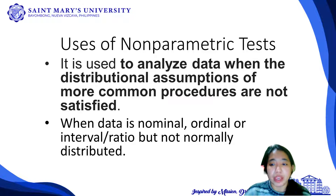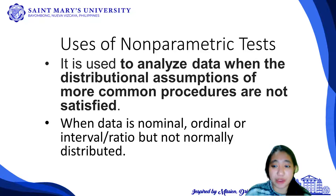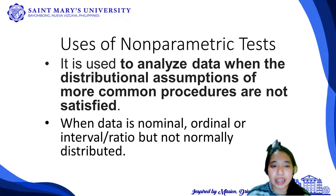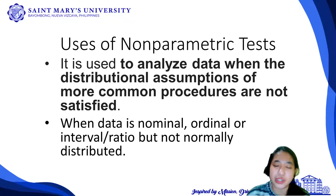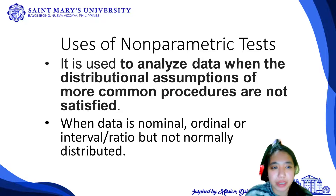Meaning to say, if we fail to satisfy the condition of normality, then even if we want to use parametric tests since they are more powerful, we tend to use a non-parametric test instead. Non-parametric tests are used for all types of data — nominal, ordinal, interval, or ratio — with the emphasis that the data is not normally distributed.